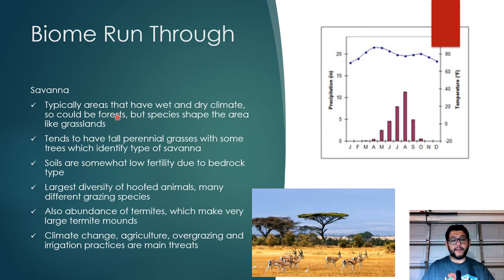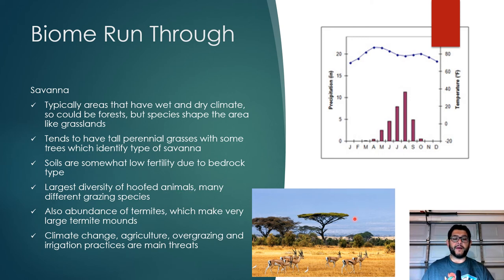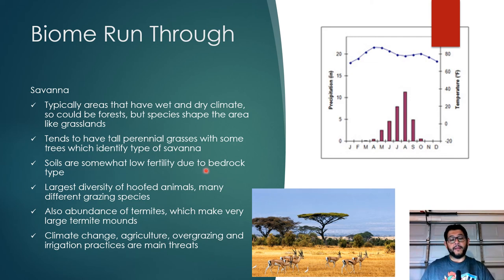Savannas are similar to grasslands but have low-fertility soils due to poor bedrock. They resemble grasslands but lack the same soil richness. Savannas host the largest diversity of hoofed animals — antelope and various ungulates — and an abundance of termites building large mounds, which are a key indicator of this biome. Threats include climate change, agriculture, overgrazing, and poor irrigation practices that move water away from these areas.